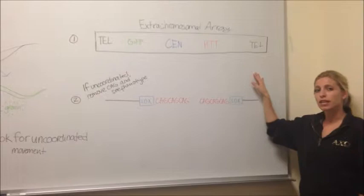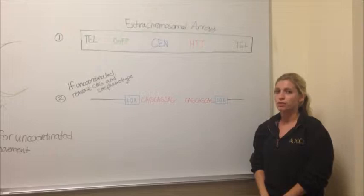The model organism we chose to study Huntington's disease in is C. elegans. C. elegans is transparent, so you can see any marker like GFP, and it also doesn't have an HTT ortholog, so it's a novel organism to study Huntington's disease in.